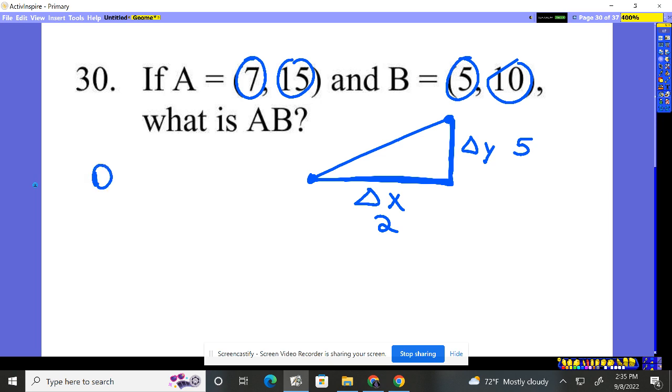Or I can use my distance formula, which says it's the square root of the change in your X squared plus the change in your Y squared. To find the change of anything, you simply subtract the values. 7 minus 5, that's how I got 2 right here. So 2 squared plus the change in my Ys, 15 to 10, that's a change of 5 squared.